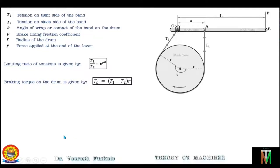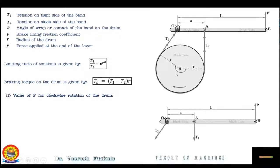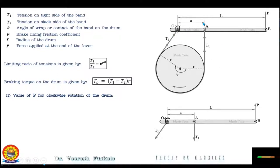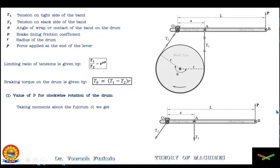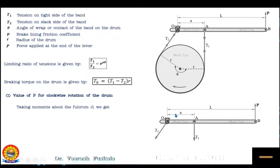Now let us consider the first case and find out the value of P for clockwise rotation of the drum. For clockwise rotation, as shown in the figure, the end of the band connected to the fulcrum O will be the slack side with tension T2, and the end of the band attached to A will be the tight side with tension T1. Now let us take moments about the fulcrum point O. Force P will rotate the lever in the anticlockwise direction about the fulcrum, so the moment will be positive with magnitude P multiplied by the perpendicular distance of its line of action from the fulcrum, which is distance L.